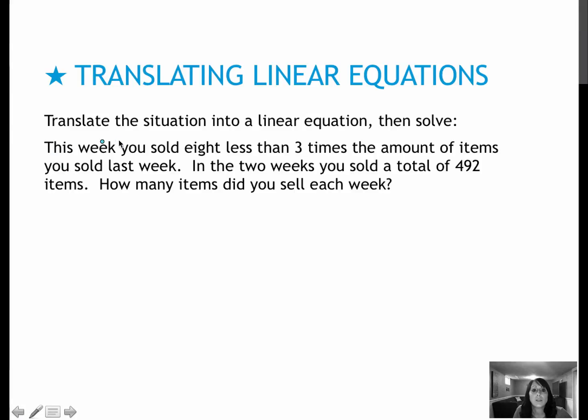So this week, I'm going to call that week 2, we sold 8 less than 3 times the amount that we sold week 1. So we're going to say that x is week 1 items. So week 2 would be 8 less than 3 times what I sold in the first week. So that would be 3 times what I sold in the first week, but 8 less than that. Equals week 2 items.